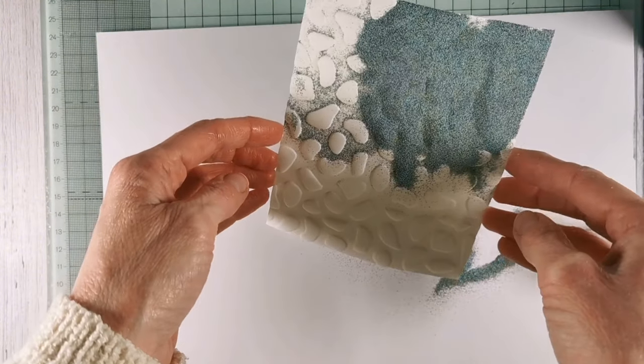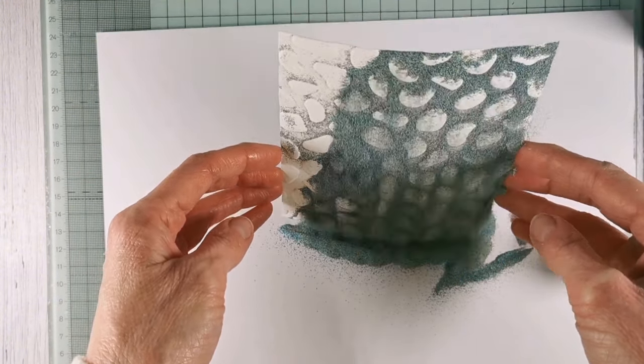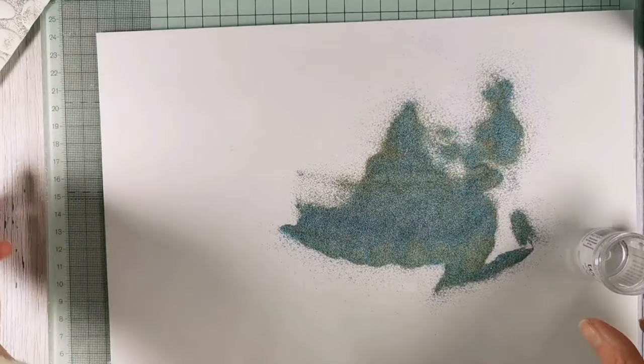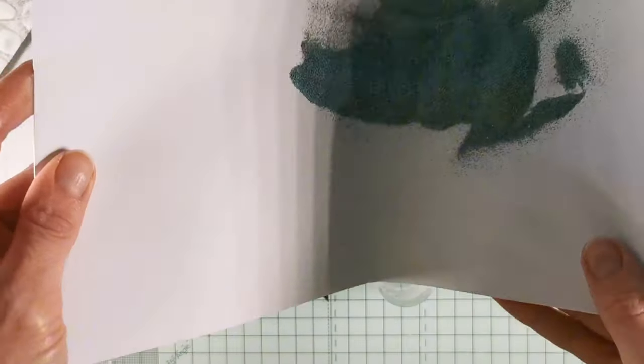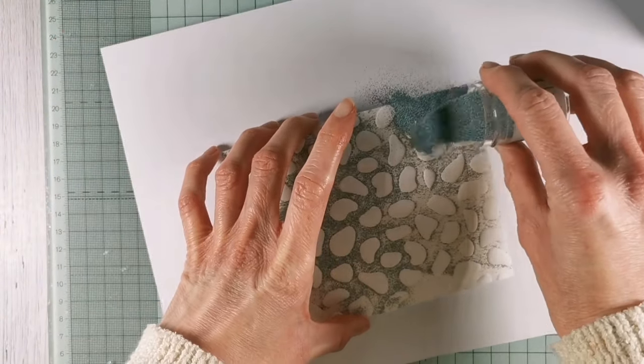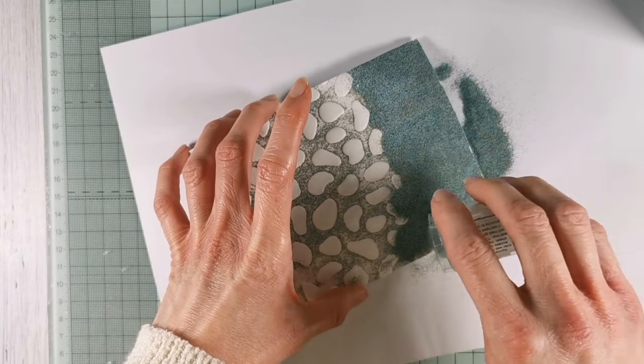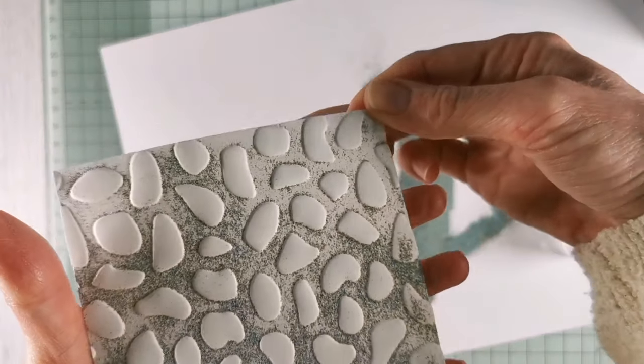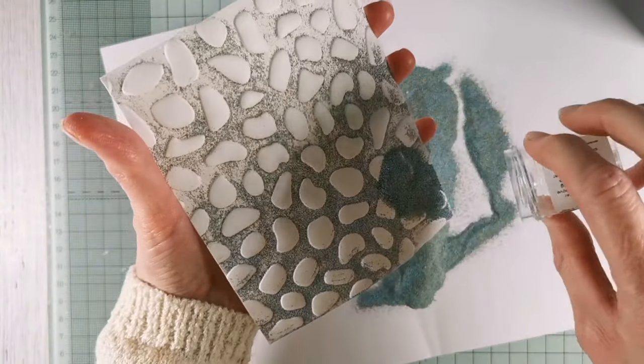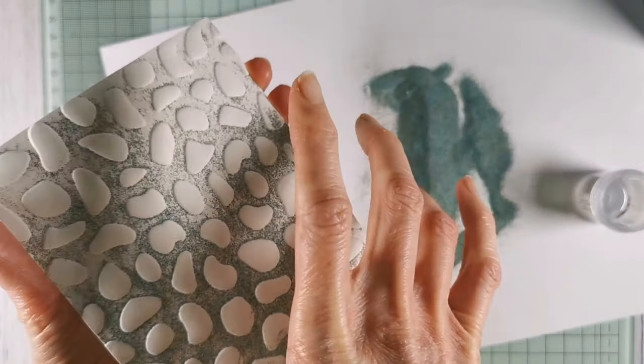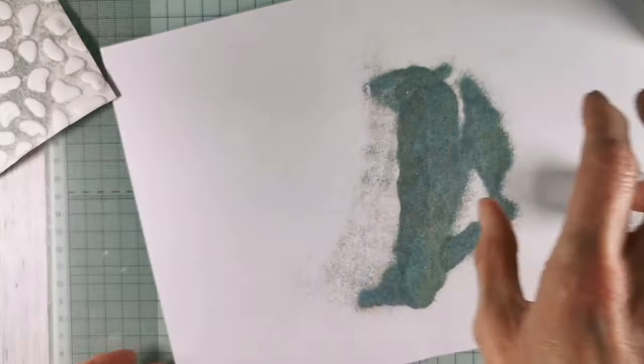The embossing powder that I'm using this time is called Sea Salt, and I absolutely love this powder, it's so beautiful. It's a lovely blue, but it's got flecks of gold in it, and when it's heat set, it just looks stunning. So I'm popping a bit more powder on to this end where it didn't quite catch properly the first time, which is absolutely fine. Never be afraid to go over it two or three times if you need to, and then I'm just going to emboss that with my heat tool.